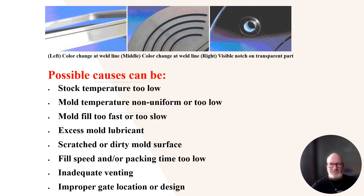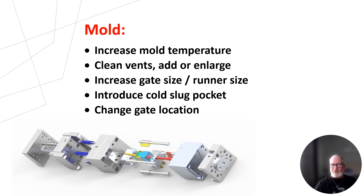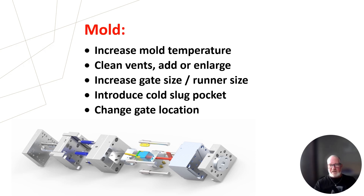The first area to look at is the mold. You're going to check and look at increased mold temperature, make sure the mold is clean, clean vents and add or enlarge vents, increase gate size or runner size, introduce a cold slug pocket, and change gate location. A lot of these you can fix right away — clean the mold, make sure everything's clear, and add a vent where needed so material can flow quicker and not cause trapped gas.